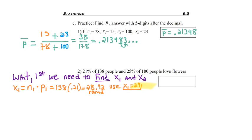If 29 people out of 138 like flowers, that's the closest for whole numbers we'll be able to get to 21%. Finding X2, we're taking the 180 times the .25, and we get the whole number, 45. Remember, if you get a whole number, then that's what you use. X2 is 45.